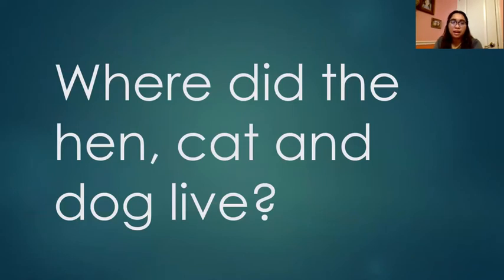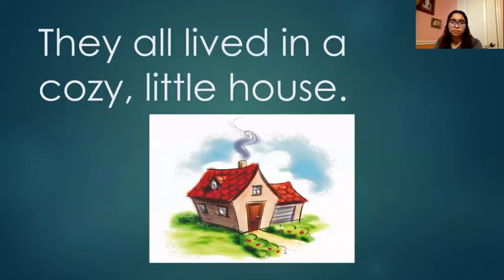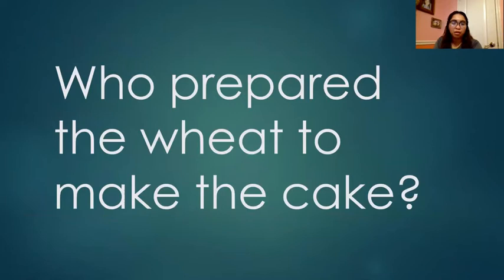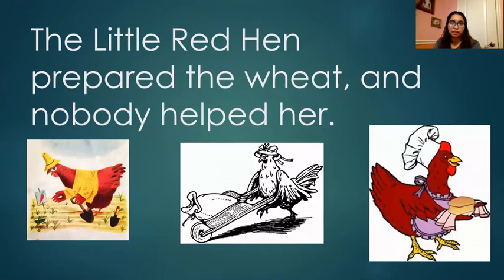Where did the hen, cat, and dog live? They all lived in a cozy little house. Who prepared the wheat to make the cake? The Little Red Hen prepared the wheat and nobody helped her.